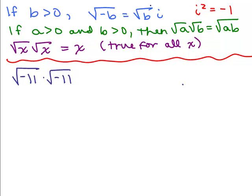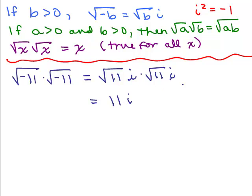Keep in mind these rules: i equals square root of negative 1, so i squared equals negative 1, and to simplify the square root of a negative number, write the square root of the positive number times i. Numbers under the square root must be positive to multiply them together. But the square root of x times square root of x always equals x no matter what x is. So for square root of negative 11 times square root of negative 11, write it as √11·i times √11·i. Square root of 11 times square root of 11 is 11, and i times i is i squared.